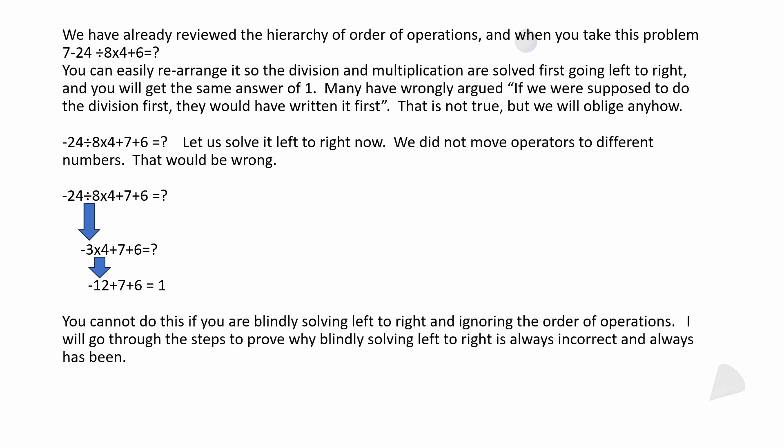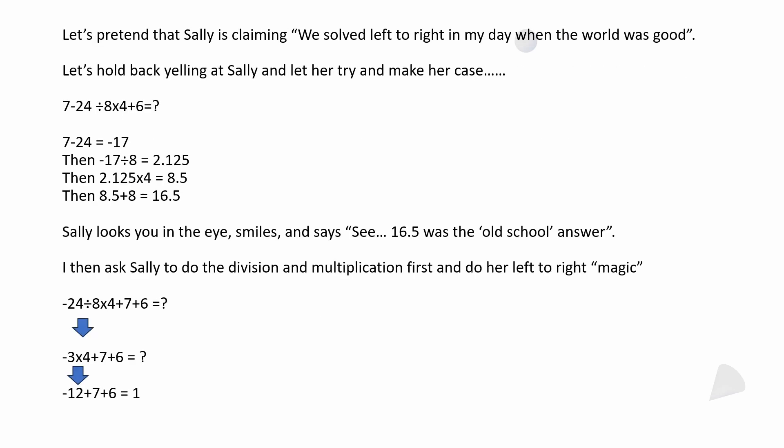If you solve it left to right, notice that we didn't move any operators to different numbers. We're still dividing, multiplying, adding everything the same, subtracting the same. You work this thing out, you end up with the answer of one. When I'm saying we solved it left to right, we solved it left to right using the order of operations. We did the division first, which was all the way to the left. We did the multiplication second. Then we finished with addition and subtraction going left to right, and we got one. You're going to find out you cannot do this. You can never get the same answer if you're blindly solving left to right and ignoring the order of operations. I'll go through the steps to prove why blindly solving left to right is always incorrect, was never taught, and it's always been wrong.